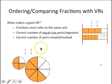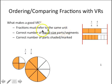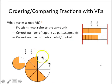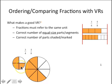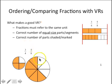Looking at this example below, we're comparing the same fractions — three-fourths and five-eighths — but our models do not refer to the same whole or the same unit. This one unit is a lot smaller than this one unit. So this representation creates a false impression that five-eighths is actually greater than three-fourths, which we know is not true. Three-fourths is larger, so making sure both representations refer to the same whole is really important.